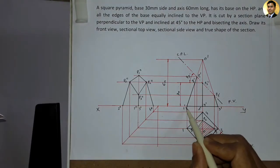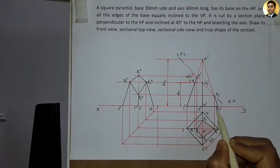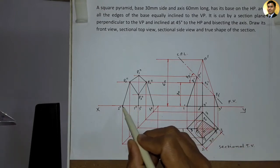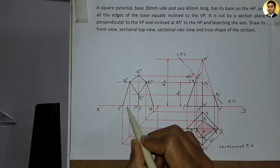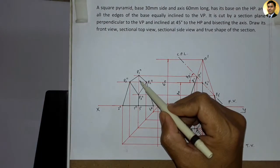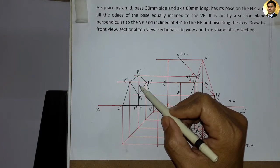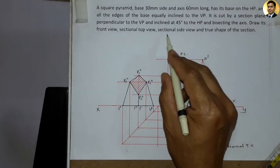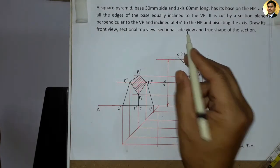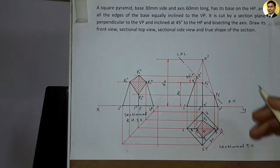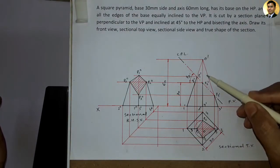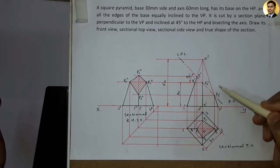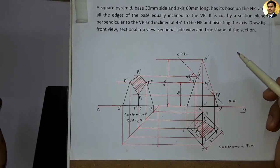The visible base and slant edges are joined with dark line, and the section surface edges are also drawn in dark line. This is the sectional right-hand side view. Now hum is condition ka true shape draw karenge. Iske liye hum P1-dash, P2-dash, aur P3-dash mein se 45-degree ke angle par is direction mein random length ki projection lines draw karenge.